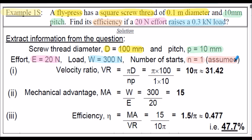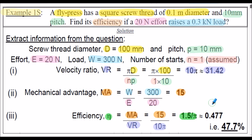Firstly, we calculate the velocity ratio VR: that's pi multiplied by the diameter divided by the number of starts multiplied by the pitch. Inserting our values, VR equals 10 pi, or approximately 31.42. Next, we calculate the mechanical advantage: load W (300 N) divided by effort (20 N), so MA equals 15. Finally, to calculate the efficiency eta, that's MA divided by VR. The efficiency is 15 divided by 10 pi, or 1.5 divided by pi, approximately 0.477, or 47.7%.